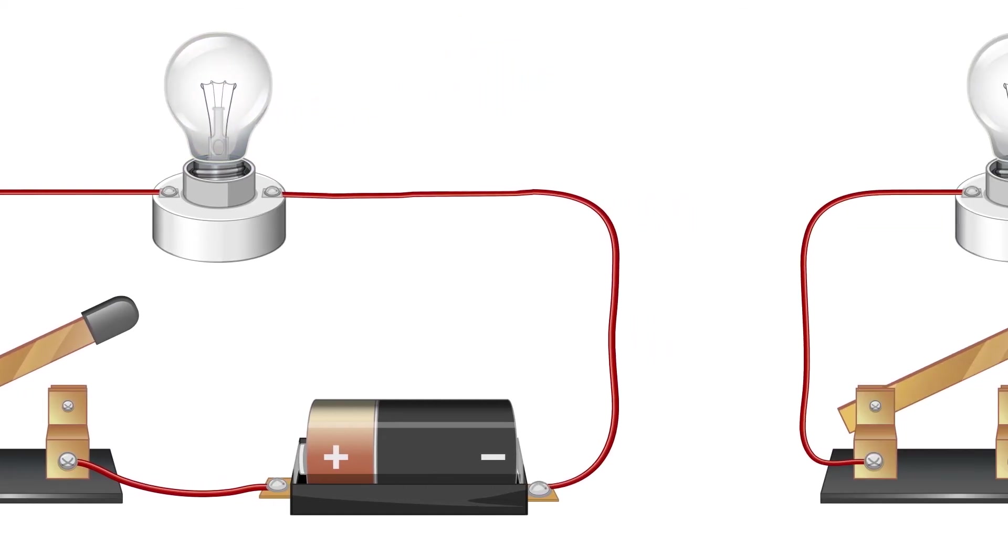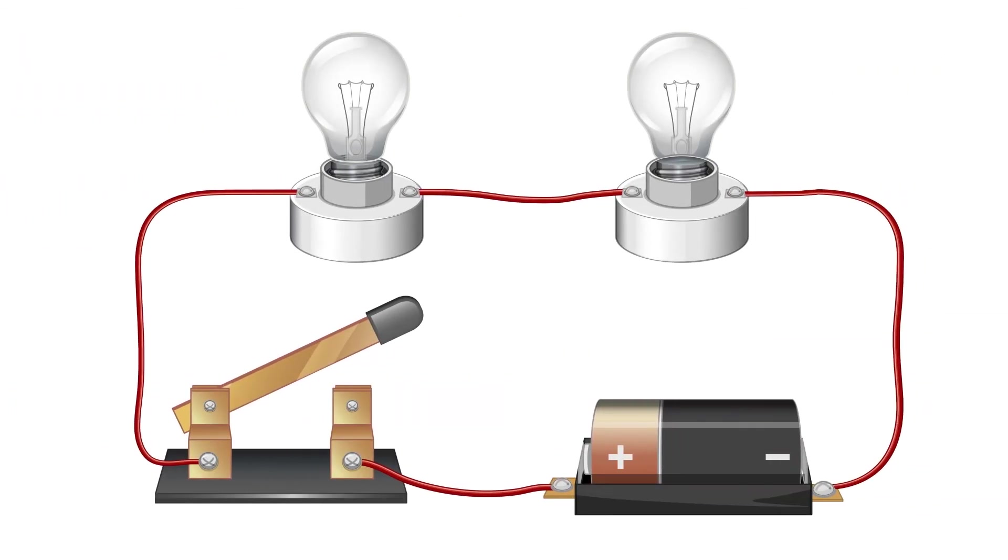How will the brightness of the bulb change if we add another bulb in series? When another bulb is added in series,